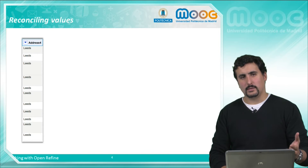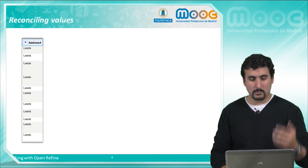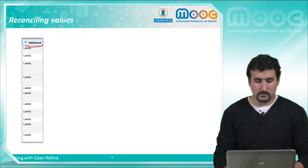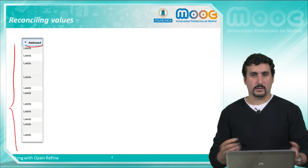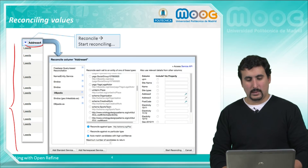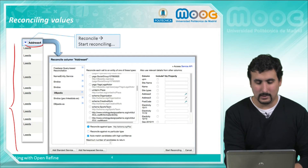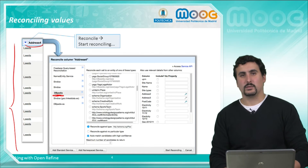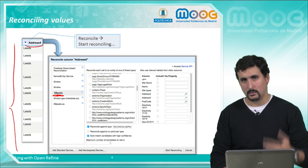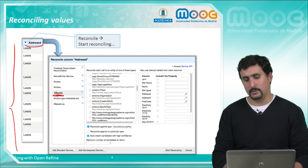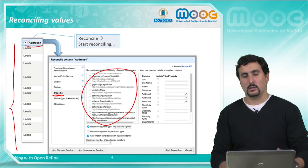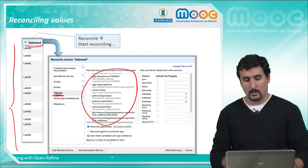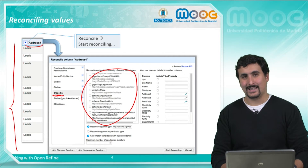Let's see how we can reconcile values from a given column. In column address4 we have values from our dataset — in this case all the values are the same, the name of the city of Leeds. We can start reconciling this column, selecting a reconciliation service named DBpedia, which is a SPARQL-based reconciliation service. As we see here, we can select the classes we want to explore for finding matches — it will select individuals belonging to these classes and try to find a match.